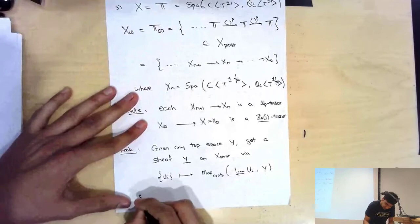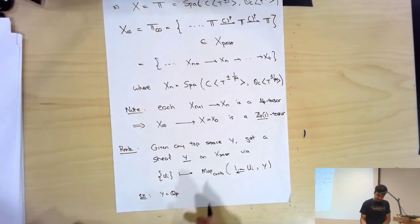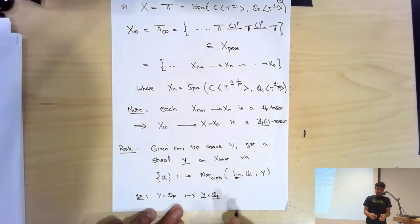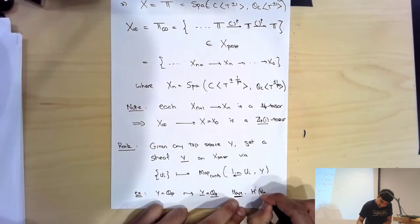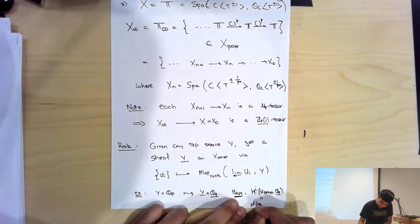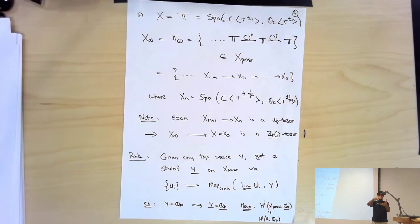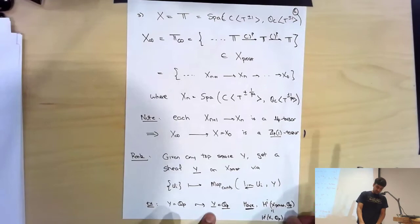As an example, take Y = Q_p with its natural topology. Q_p is a topological space you can regard as a sheaf Q_p on the pro-étale site. This sheaf turns out to be very interesting: it's a genuine sheaf of abelian groups, and its cohomology is the étale cohomology with Q_p-coefficients. So H^i(X_{pro-ét}, Q_p) is the correct étale cohomology of X with Q_p-coefficients. This is the pro-étale site's advantage: it actually produces an honest sheaf whose cohomology you're taking, rather than some kind of pro-system of sheaves.